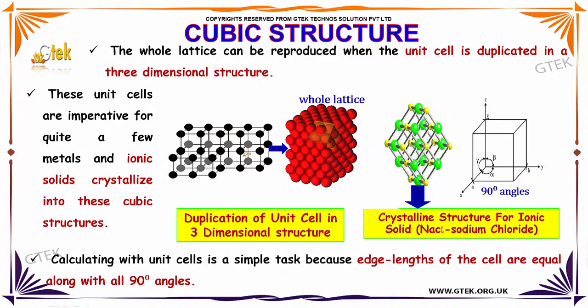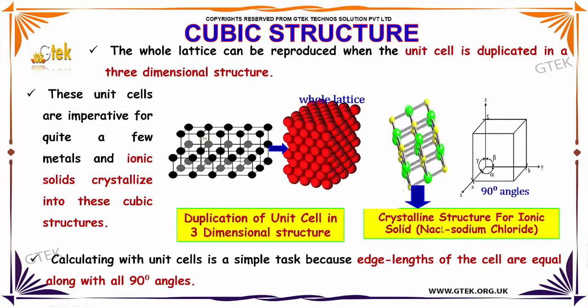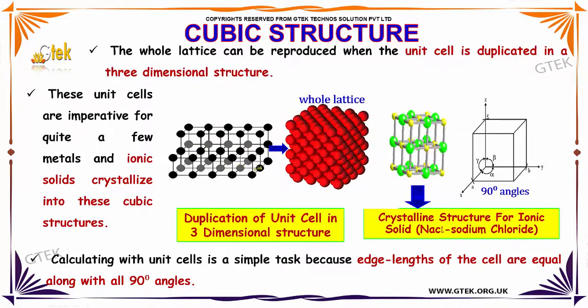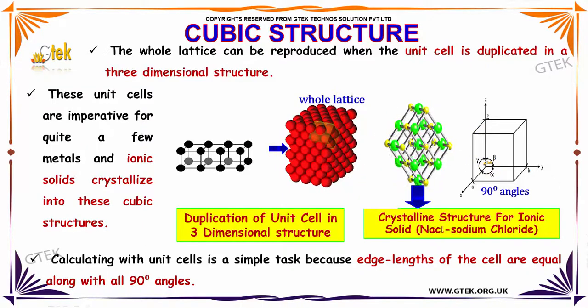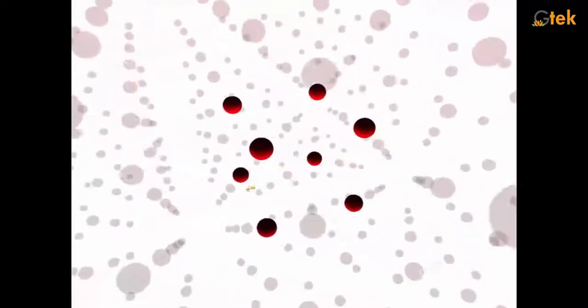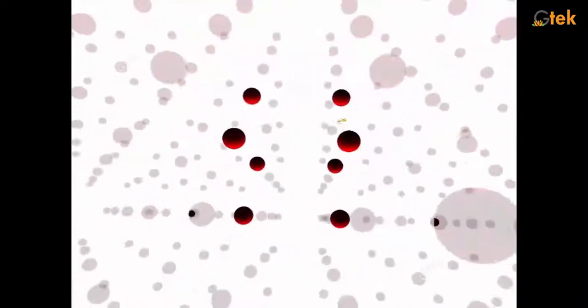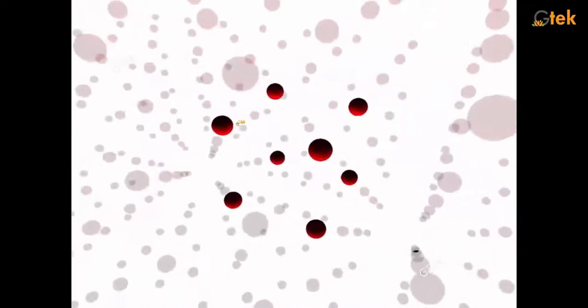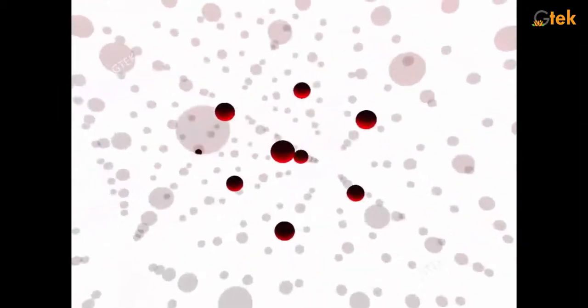Calculating with unit cells is a very simple task because edge lengths of the cell are equal along 90 degree angles. This is how the simple cubic structure is. You are able to see the simple cubic structure, a 3D of a simple cubic structure is displayed here.